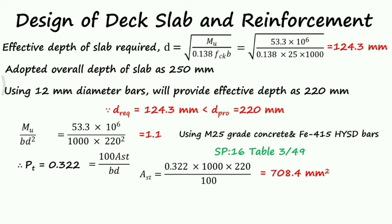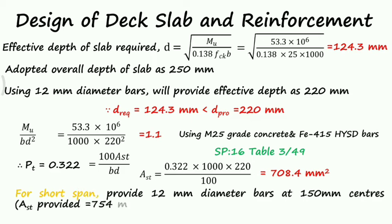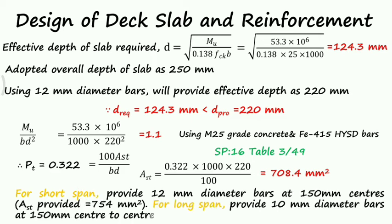Using 12 mm diameter bars for shorter span, we get spacing as 150 mm center to center, corresponding to AST provided as 754 square mm. Similarly, for the longer span we provide 10 mm diameter bars with spacing 150 mm center to center. The depth of the slab is safe and AST is obtained in both longer and shorter directions.